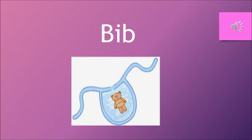The first word we are going to do is Bib. Sound of B is B, then Ib — B, Ib, Bib. A Bib is a type of napkin which children wear around the neck when they are eating food so their dress doesn't get dirty.